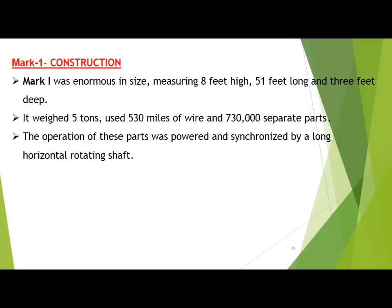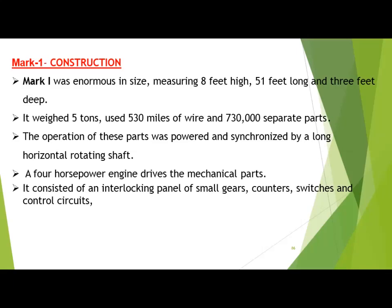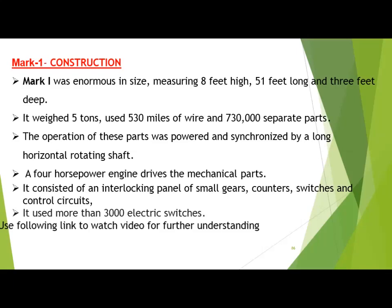The operation of these parts were powered and synchronized by a long horizontal rotating shaft. A four-horsepower engine drove the mechanical parts, which is why we call it an electromechanical machine. It consisted of an interlocking panel of small gears, counters, switches, and control circuits. It used more than 3,000 electric switches - electromagnetic switches - which were used to control the flow of current in the machine.